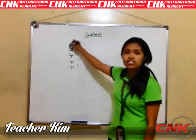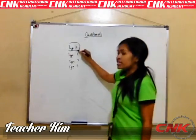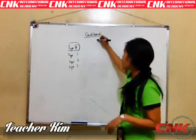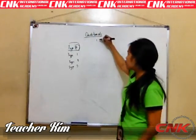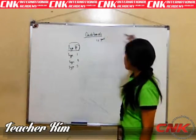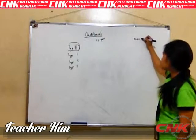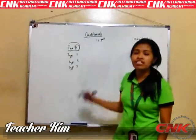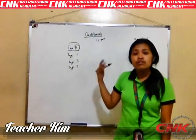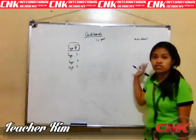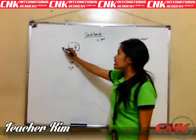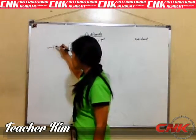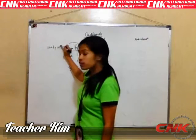Let's first discuss Type 0. It is Type 0. So we have two parts: we have the if-part and we have the main clause. As I said, it's Type 0 — that means it doesn't have a condition so that the main clause is going to happen. When we say Type 0, it is scientifically proven or it is just a fact.